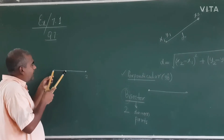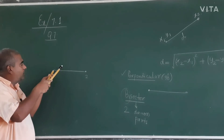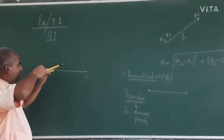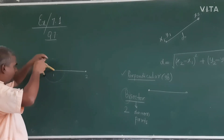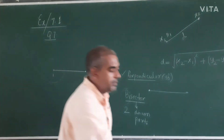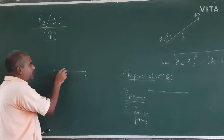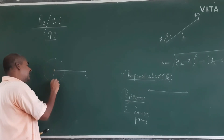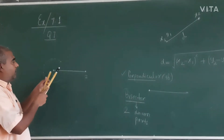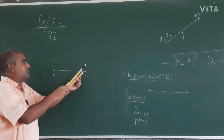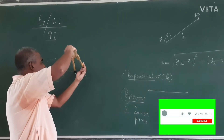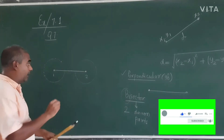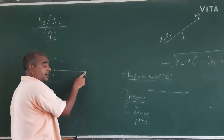From one endpoint we draw a circle — a circle is a collection of points that are equidistant from the center. Whatever distance we take from the first point, we take the same distance from the second point and draw another circle. So from each endpoint, we have many equidistant points lying on each circle.